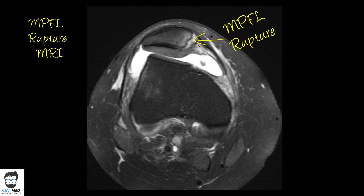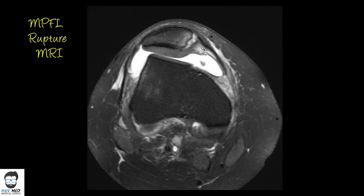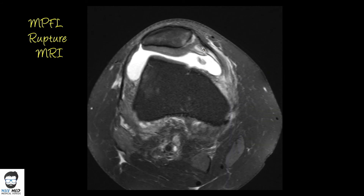This is a classic presentation of a patellar dislocation, where you see anterior lateral femoral edema and impaction, medial patellar impaction, and medial patellar femoral ligament rupture. In this case there is also a small loose body lying free, possibly from the patella. Hope you like this video — keep coming back for more.